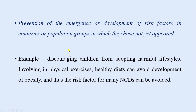Some examples of primordial prevention include discouraging children from adopting harmful lifestyles. Even from childhood, if every person can adopt a beneficial lifestyle and be discouraged from harmful ones — for example, involving in physical exercise and healthy diets — this can avoid the development of obesity. Obesity is also a risk factor for many non-communicable diseases like hypertension and diabetes. So these NCDs can be avoided if obesity is prevented by engaging in physical activities and adopting healthy diets.